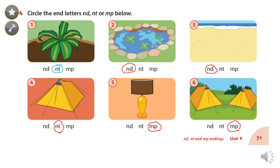Here we have six pictures, and under each picture we have consonant blends. Look at the first one — it's a plant, NT. Two — it's a pond, ND. Three — it's sand, ND.